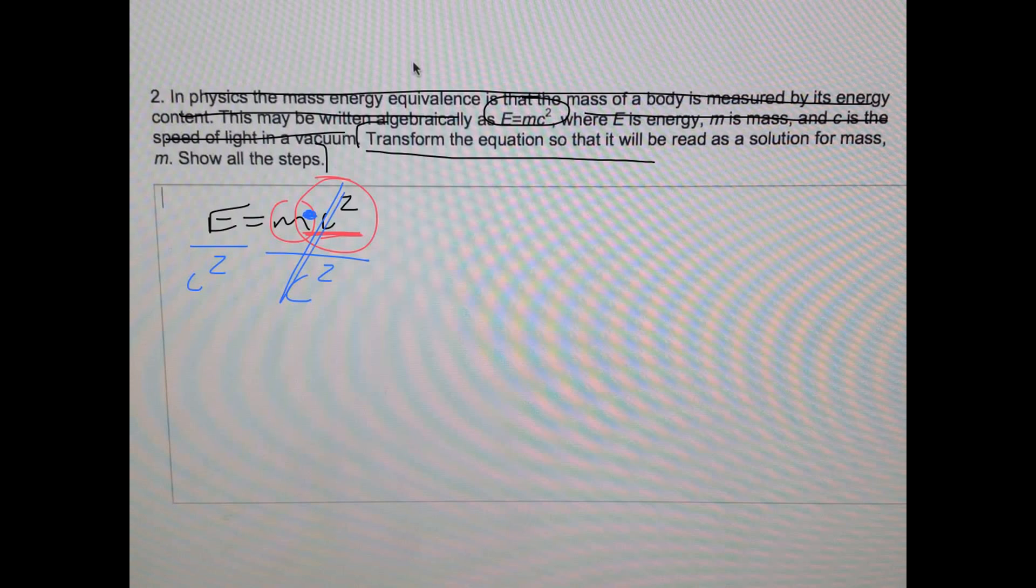That cancels out, so that's gone, so m's by itself which is what we want. So m equals, and then can you solve any more of E divided by c squared? Can that be reduced any? No, it cannot. So you are done. You got m by itself. There's really only one step - you divide both sides by c squared.